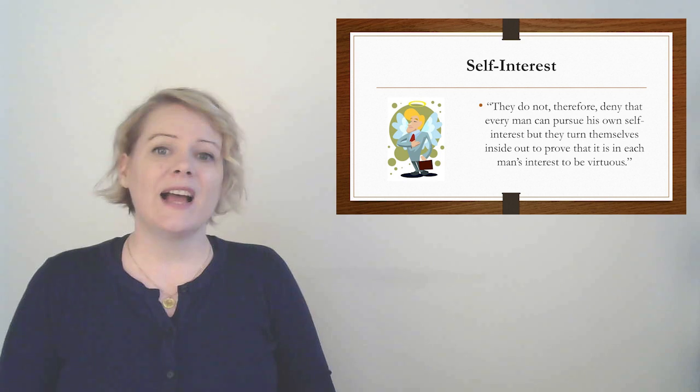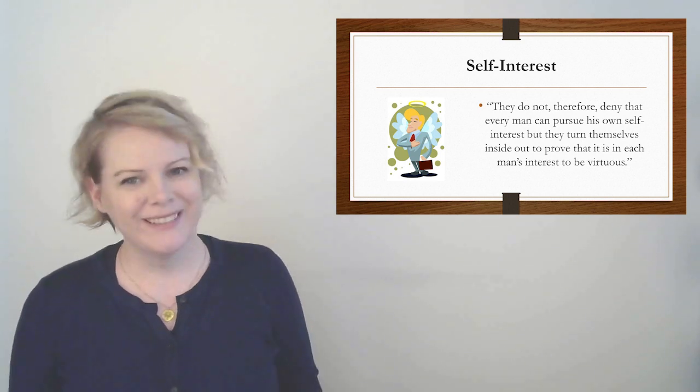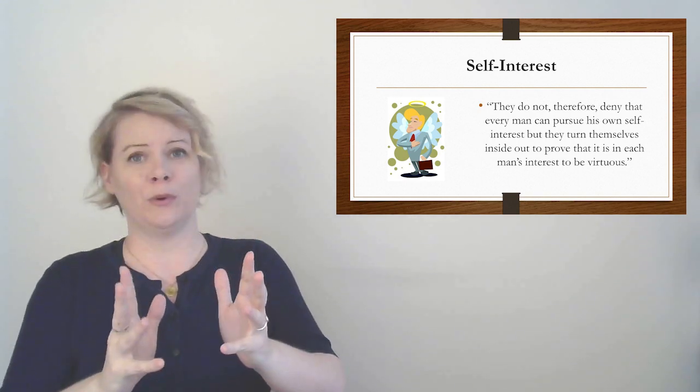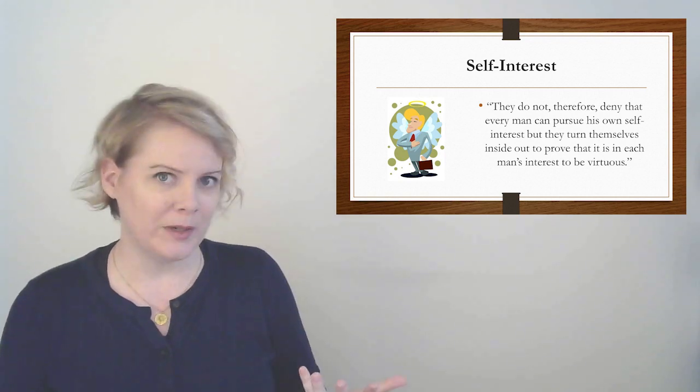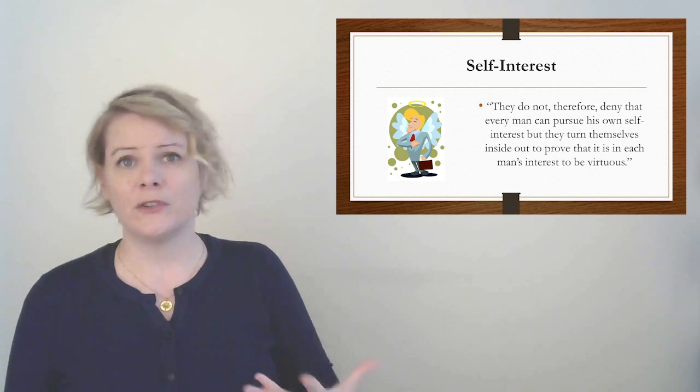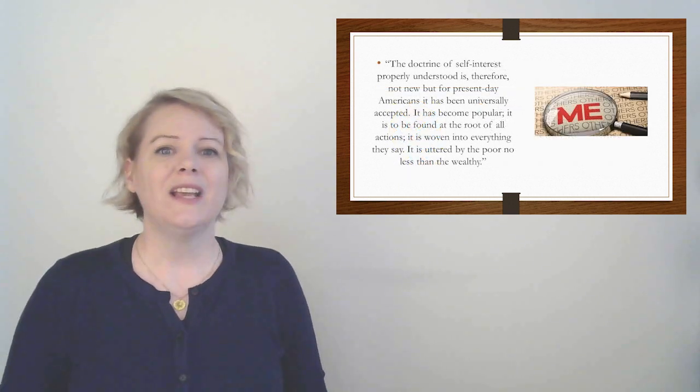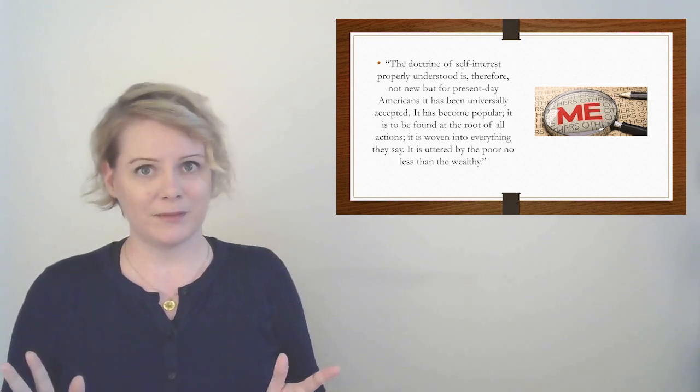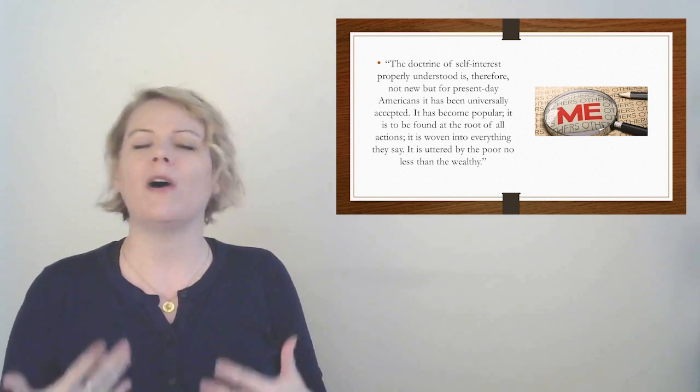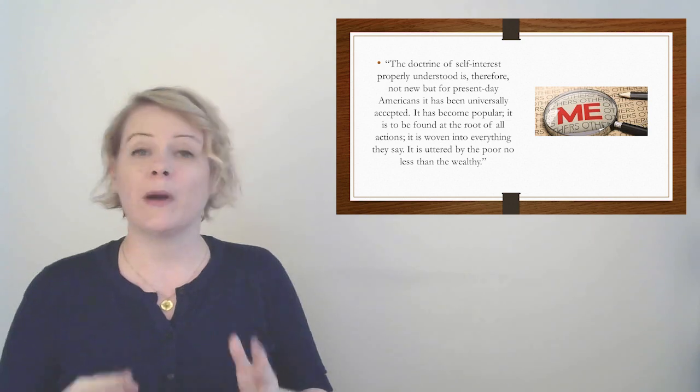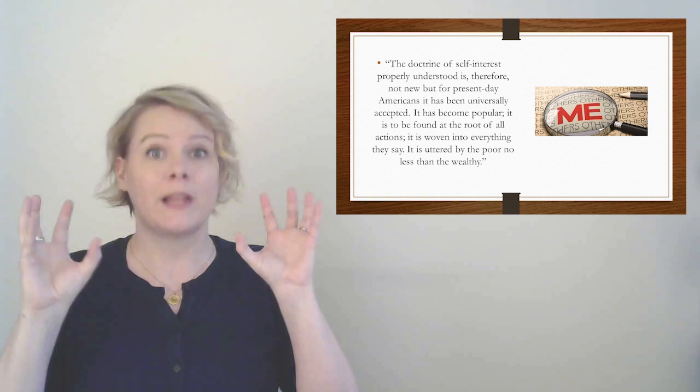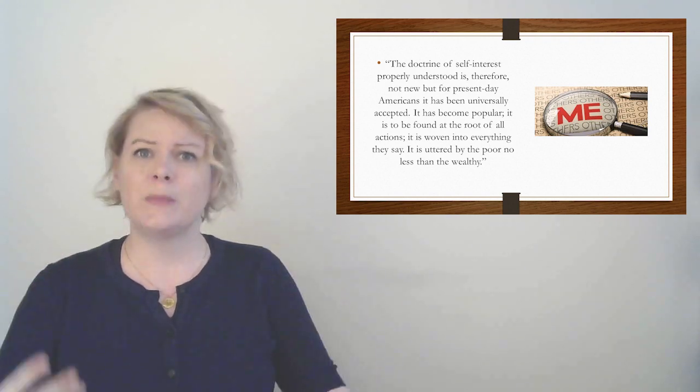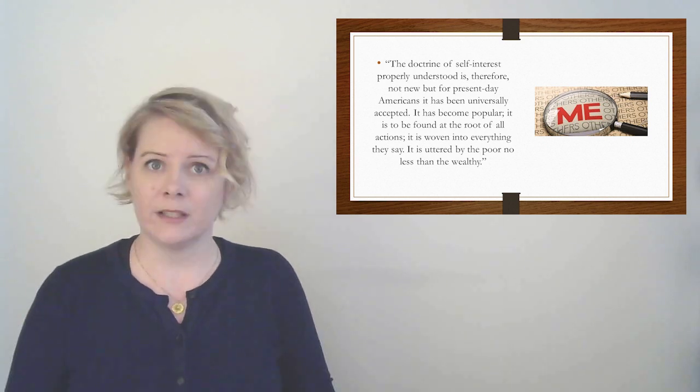He goes on, what was an isolated observation becomes a universal doctrine, and in the end, a belief is born that man helps himself by serving others, and that doing good serves his own interest. So essentially, they managed to convince people that doing things that were in your own interest also benefited other people. So you were winning both ways. You were doing two good things at the same time. They do not, therefore, deny that every man can pursue his own self-interest, but they turn themselves inside out to promote that it is in each man's interest to be virtuous. So basically, they're not saying don't do you. They're saying, wouldn't it be great if you could be an individual and help other people? Like, wouldn't it be great if we could combine self-interest and self-sacrifice?